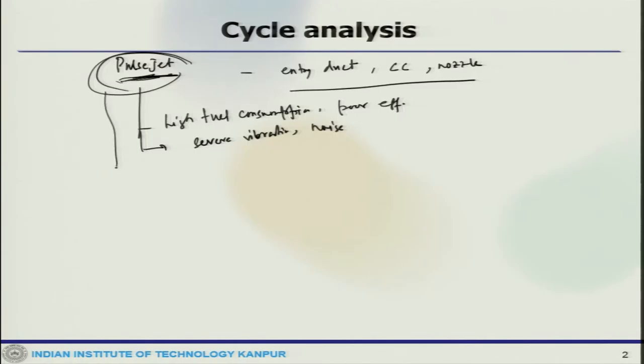The advantages here with pulsejet are: extremely light, simple, cheap, easy to construct, uses atmospheric oxygen, cheap fuels, capable of running statically. These are some of the advantages.